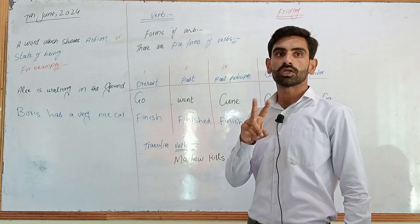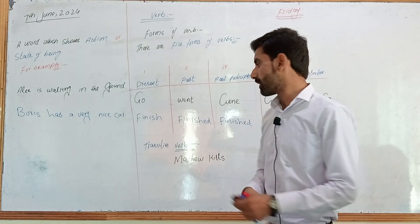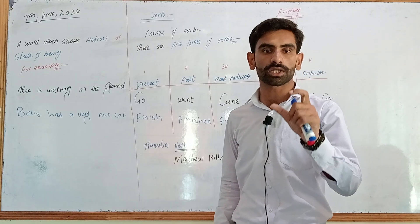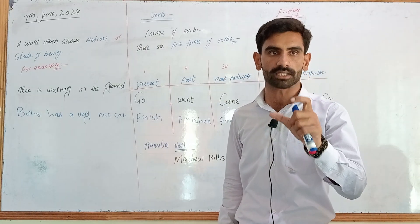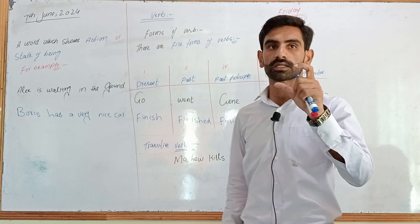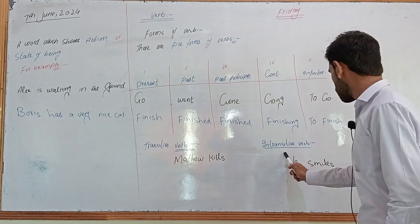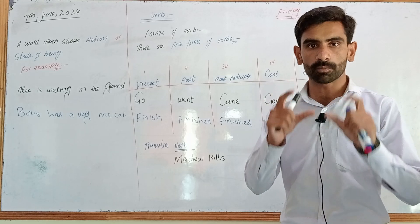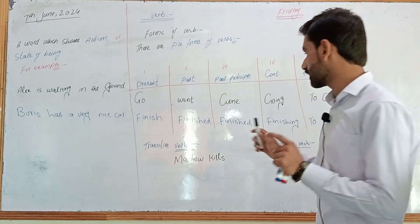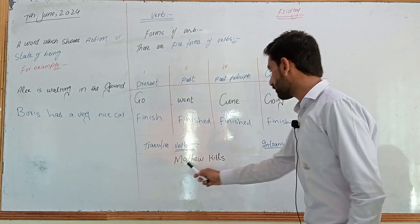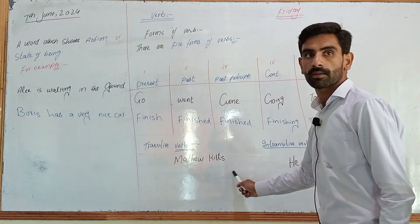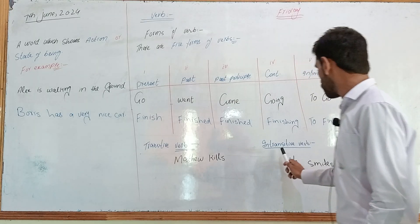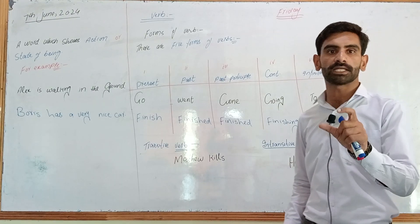But here are two more types of verbs: transitive verb and intransitive verb. A transitive verb is one which requires an object — that's what we call a transitive verb. An intransitive verb is a verb which does not require an object. For example, 'Matthew kills Boris' — it needs an object. But 'He smiles' is a complete sentence on its own, so it is an intransitive verb.